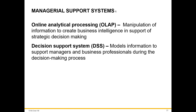Managerial support system includes online analytical processing, OLAP, and decision support system, DSS. OLAP manipulates information to create business intelligence in support of strategic decision making. DSS models information to support managers and business professionals during the decision-making process. DSS enables high-level managers to examine and analyze a large amount of detailed data from different sources. For example, insurance companies can use DSS to measure the risk of providing insurance to drivers with past violation records.